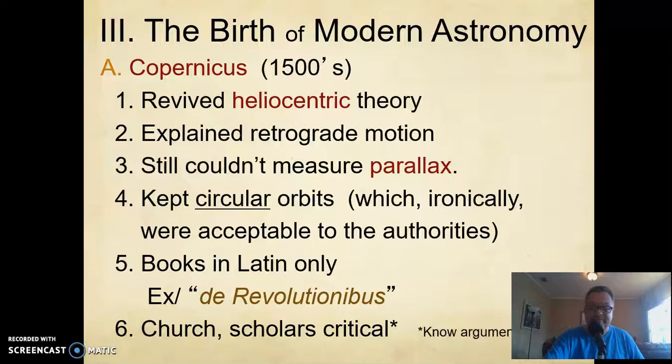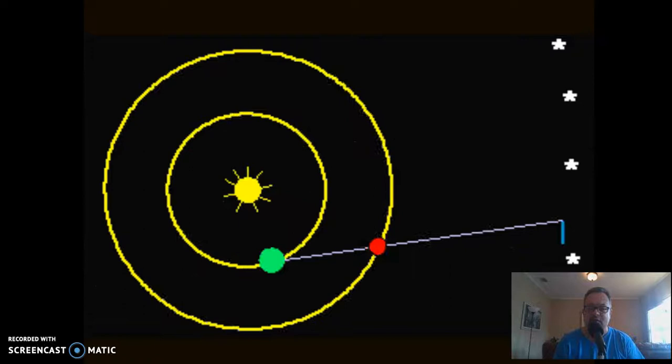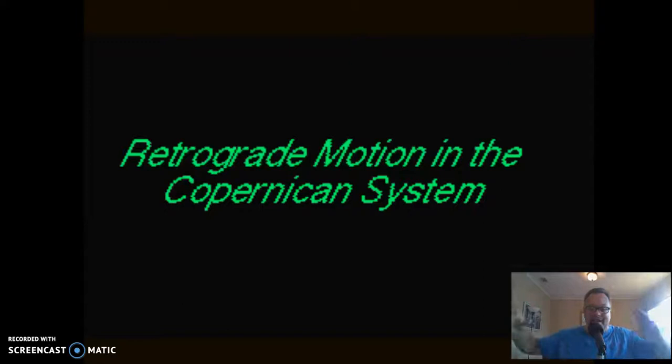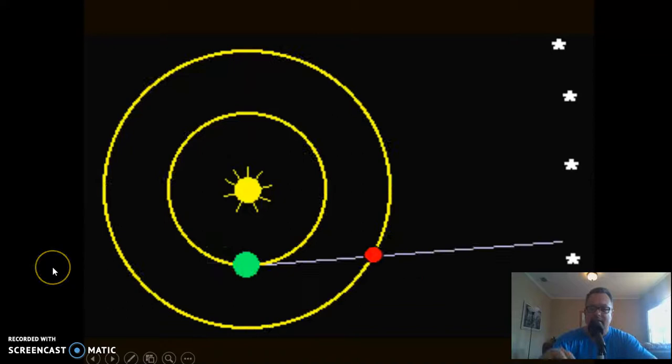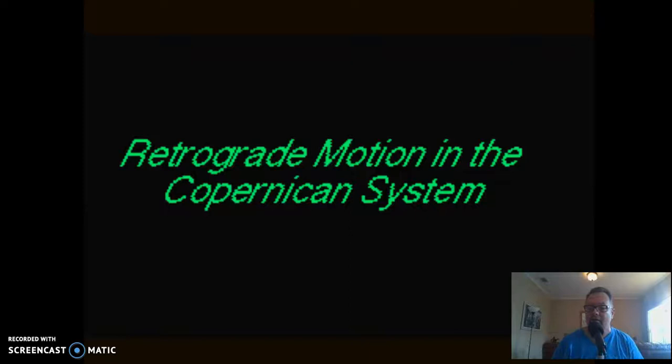Now let's see how this explains retrograde motion. Let's watch here. So now the earth is on the inside track right when we pass Mars, for example, look at that. It appears briefly to drift backwards in the sky. That's it. It's so simple. Ptolemy's making up loop-de-loops within loop-de-loops. Let's watch it one more time. Look at this right when the earth passes Mars, only during those couple months when we're passing Mars on the inside track, it would make it appear to drift backwards.